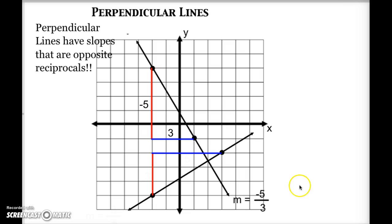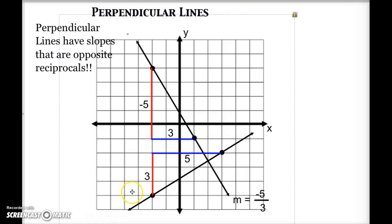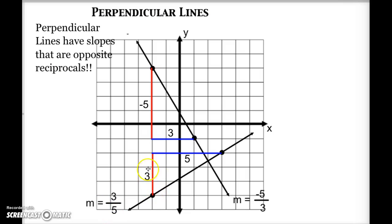The other line has a rise of positive 3 and a run of positive 5. So its slope is 3 fifths — a rise of 3 and a run of 5.